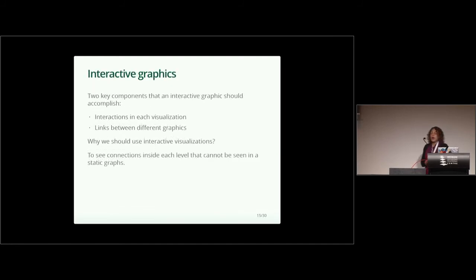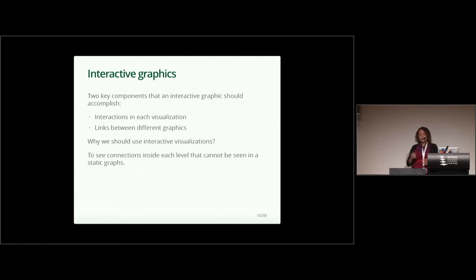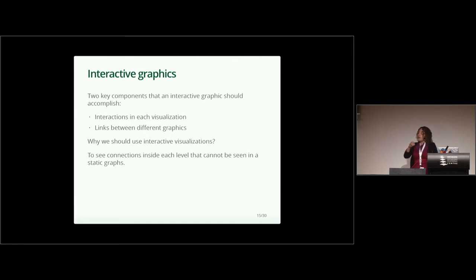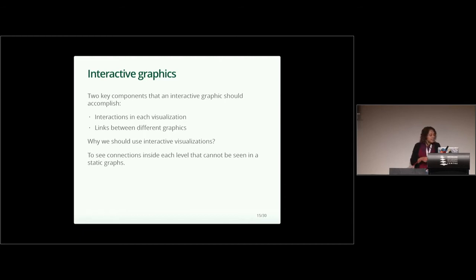What is an interactive graphic? There are two important key points. First, in each individual plot, we need to be able to have interaction — for example, when mousing over, we get additional information about the points we are looking at. Second, and very important, we want links between the different visualizations. That part is not always easy, but Carson has a lot of solutions that make our life very easy. We should use interactive graphics because we can see connections and things that would be very difficult using static visualization.